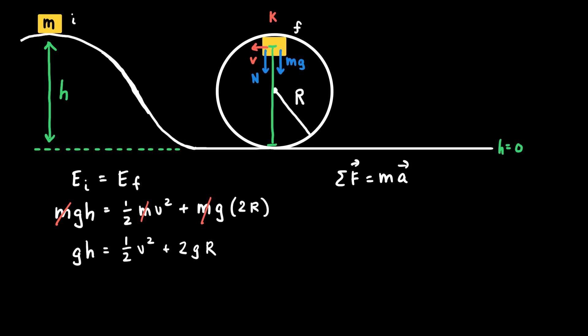And what we need to appreciate here, the key insight for this problem, is to recognize that if the cart is going around the loop with the minimum speed possible, then the cart would essentially lose contact with the loop at the very top. That would be the condition for the minimum speed. So we should write the Newton's second law equation for the case where the normal force just barely becomes zero.